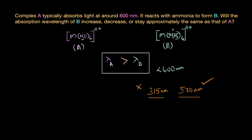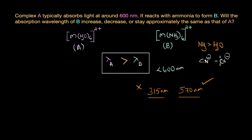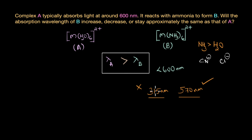This is because even though ammonia is a stronger ligand than water, the difference in splitting power between them is not very large. For instance, it's not like comparing CN⁻ with Cl⁻ — CN⁻ is a very strong ligand and Cl⁻ is very weak, so the corresponding complexes would show a much larger difference in absorption wavelength. Since ammonia and water don't differ greatly in splitting power, their absorption wavelengths also won't differ much. So if complex A with water absorbs at 600 nanometers, complex B with ammonia most likely absorbs around 570 nanometers — not as low as 315 nanometers, which would imply a substantial difference in splitting power that simply isn't the case here.